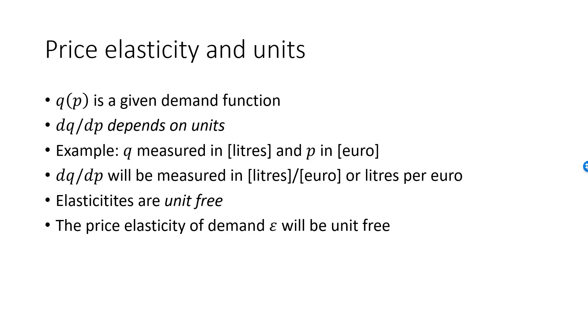This is easy to see using our example. The derivative is measured in liters per euro. We multiply the derivative by p over q to get the elasticity. p is measured in euro and q in liters. The units cancel and the elasticity has no units.